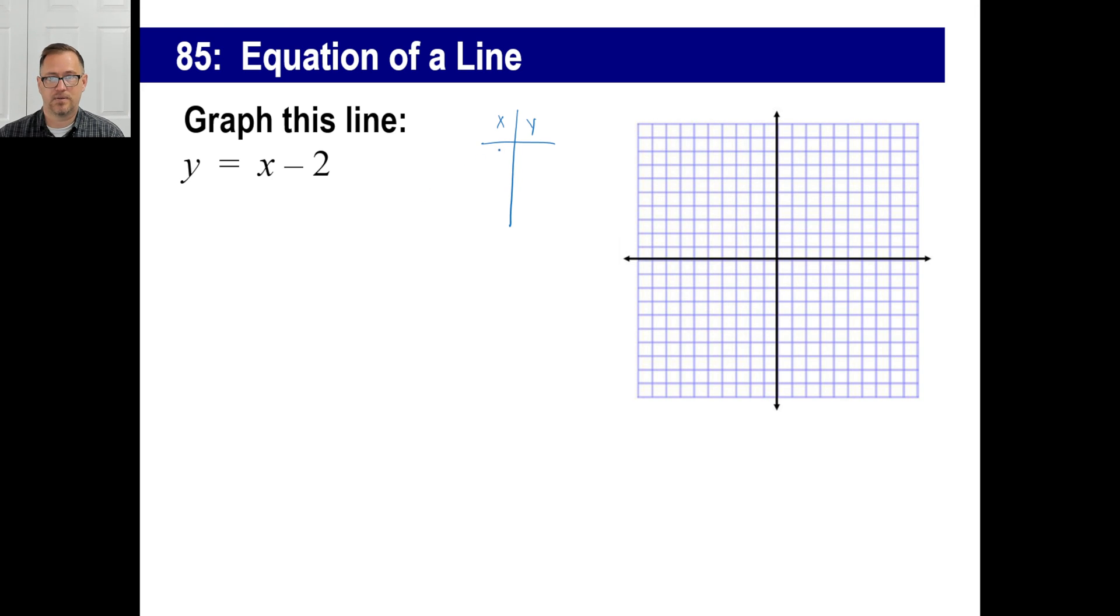Put anything you want in for X. You could put one, two, three, who cares? You could put zero, five, 80, 63, 30, whatever. So I'm just going to choose one, two, and three. Well, you tell me if Y is equal to, I'm just going to try this one here first. Y is equal to one minus two.